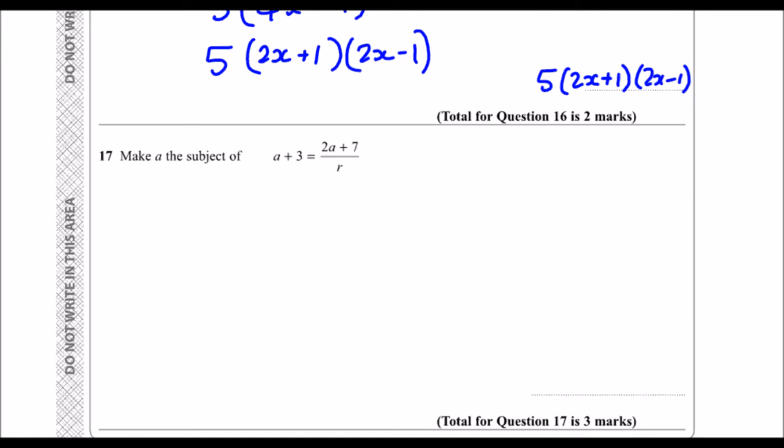Make a the subject of the formula. So that means we need to get a by itself. First step, we've got a divided by r here. If we want to get rid of a divided by r, we do the opposite - we multiply both sides by r.